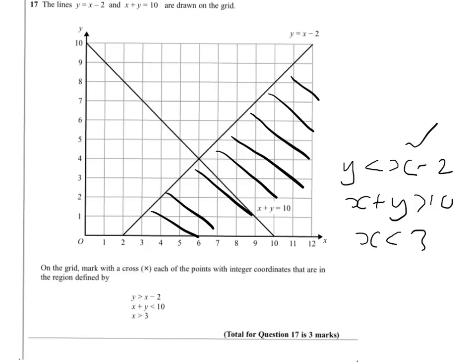So, for example, 6, 9. 6 plus 9 is 15. That's way over 10. So we need to shade above the line.